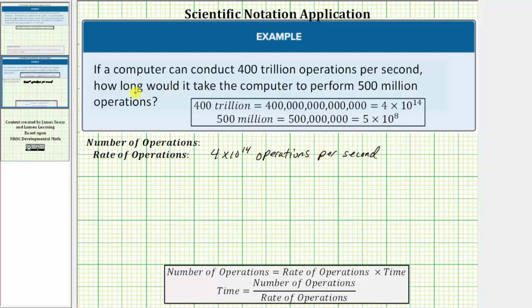The number of operations being performed is 500 million, which is equal to 5 times 10 to the 8th in scientific notation. So let's write the number of operations as 5 times 10 to the 8th operations.